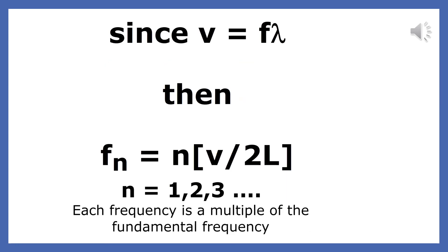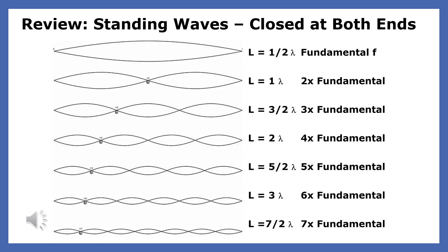You use the velocity and length of the standing wave to find the frequency of any harmonic. Now let's review what you've learned. When a standing wave is closed at both ends, there is a node at the beginning and a node at the end. The fundamental frequency produces a standing wave that has one antinode and is a half a wavelength long. All other frequencies that will produce a standing wave must be a whole number multiple of the fundamental. The third harmonic has three antinodes, is three-halves wavelengths wide, and is generated by a frequency that is three times the fundamental.